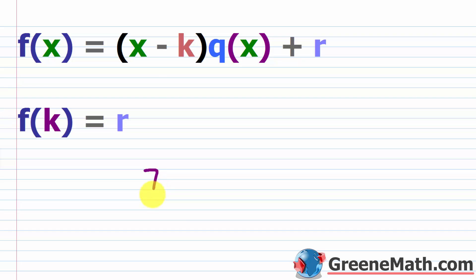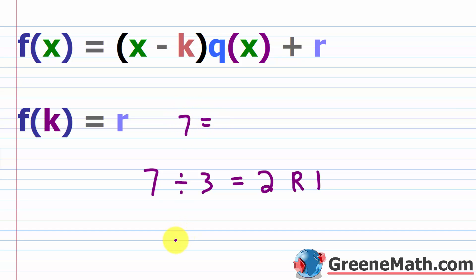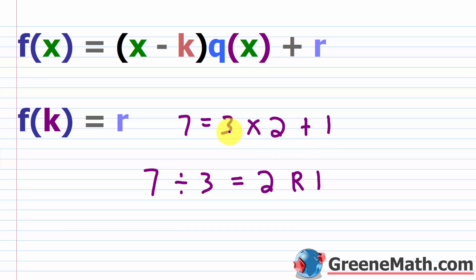Let's say you had the number 7 and you divided it by the number 3. So 7 is your dividend, 3 is your divisor, the quotient is 2, but then you have a remainder of 1. So I could write 7 using this format as: divisor (which is 3) times quotient (which is 2), plus remainder (which is 1). So 3 times 2 is 6, plus 1 gives us 7. That's all we're really doing — it's the same thing.